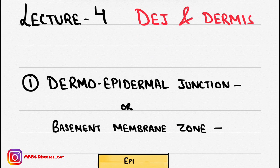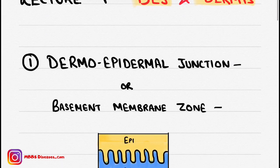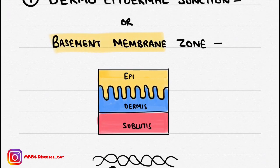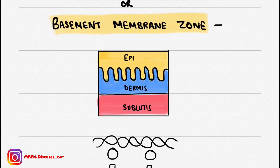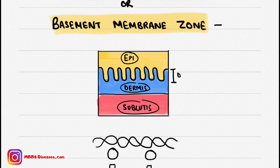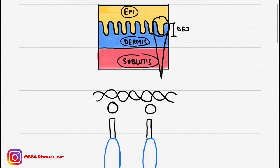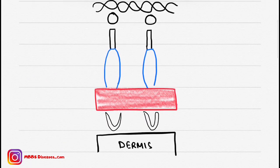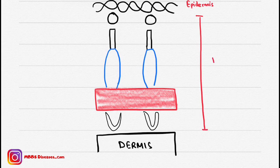The topic of this video is the dermoepidermal junction and dermis. The dermoepidermal junction is also known as the basement membrane zone. Looking at the diagram, the above layer is the epidermis, below that is the dermis, and below that is the subcutaneous part. The whole junction between epidermis and dermis is the dermoepidermal junction.